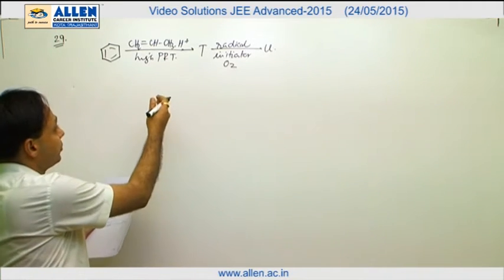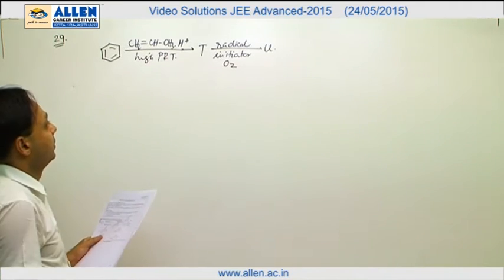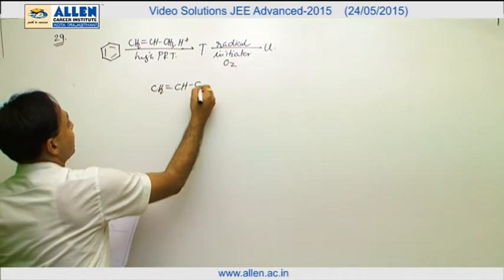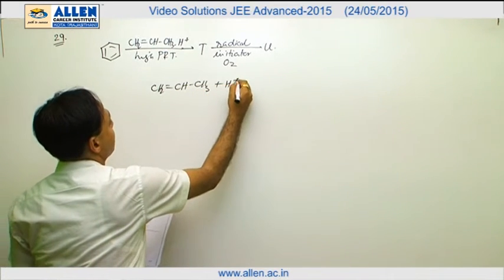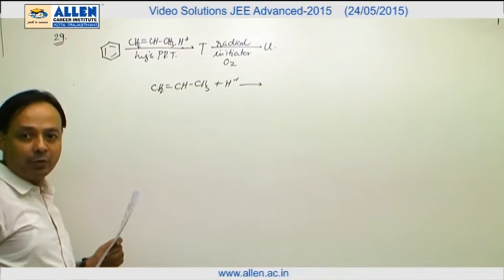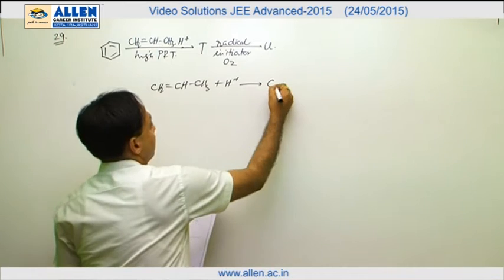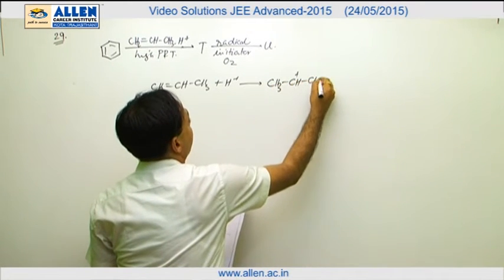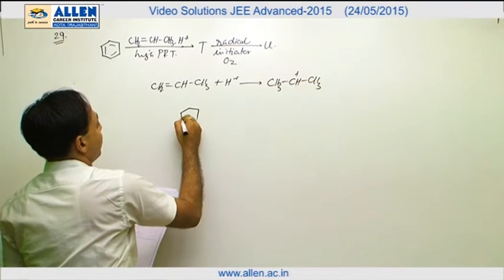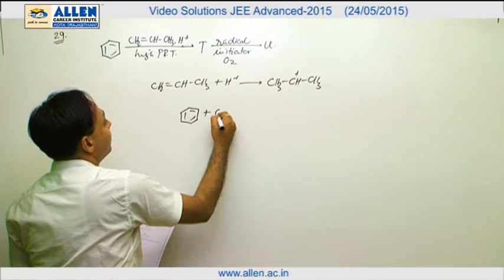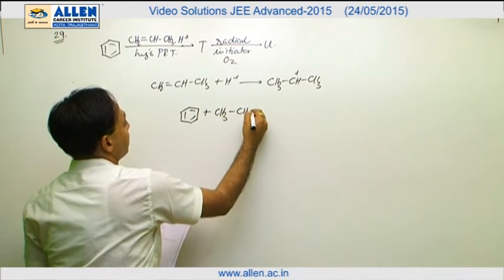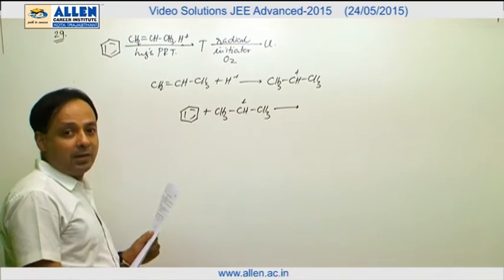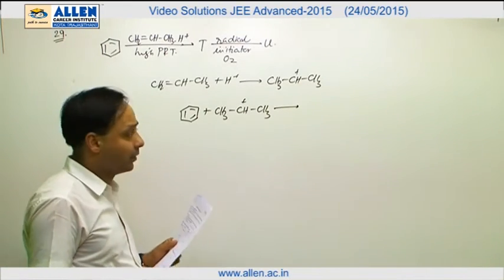In this question, the first step: propene reacts with H⁺ to give an isopropyl carbocation, and that isopropyl carbocation reacts with the benzene ring. Basically, an alkyl group is introduced into the benzene ring.